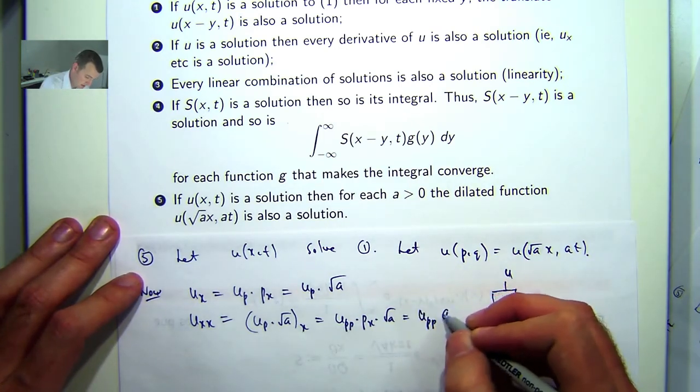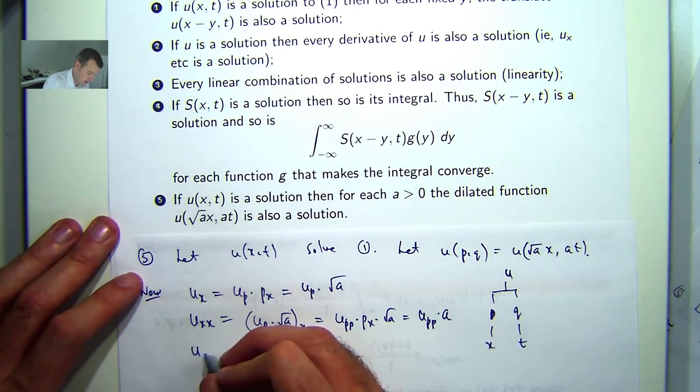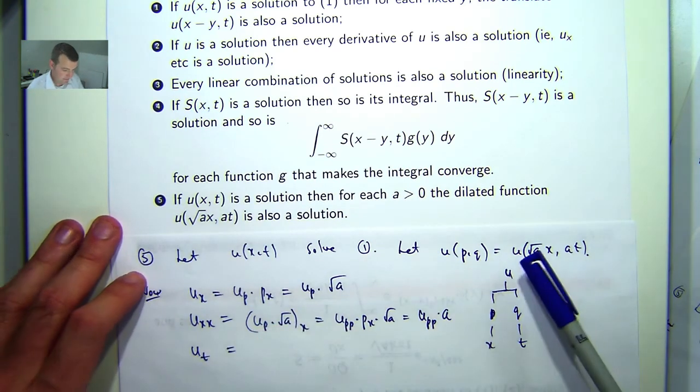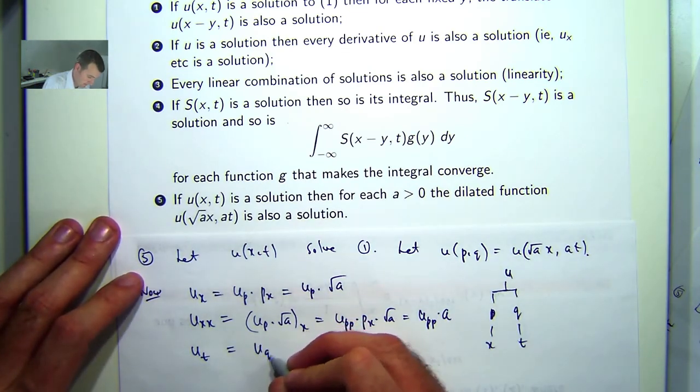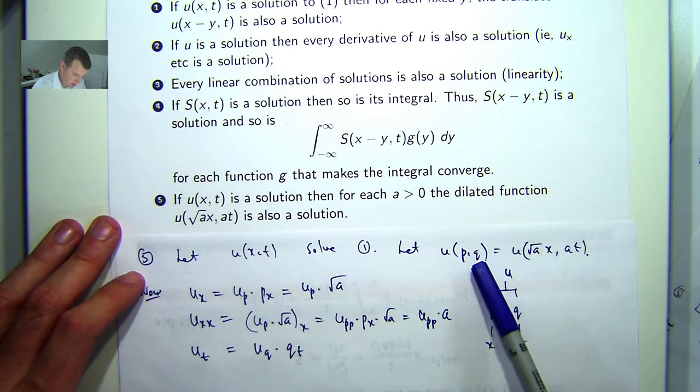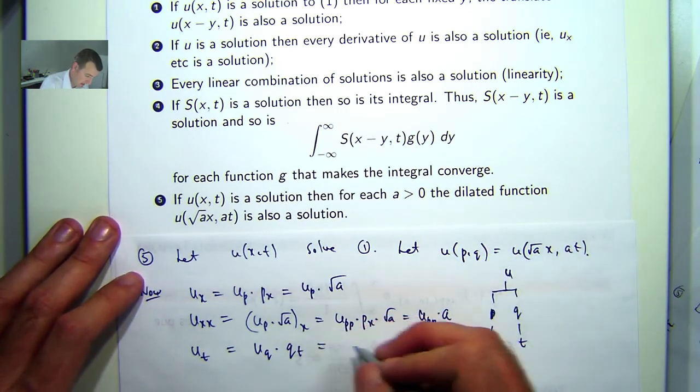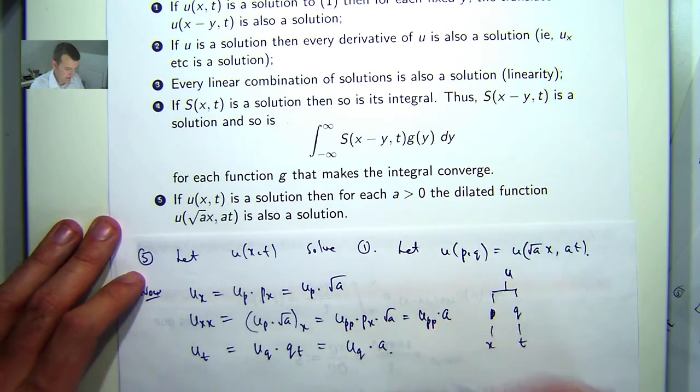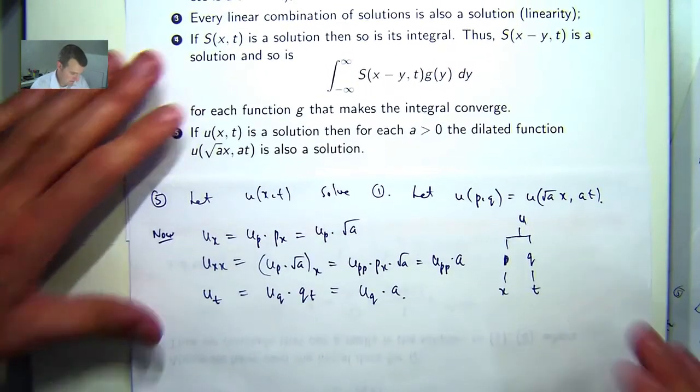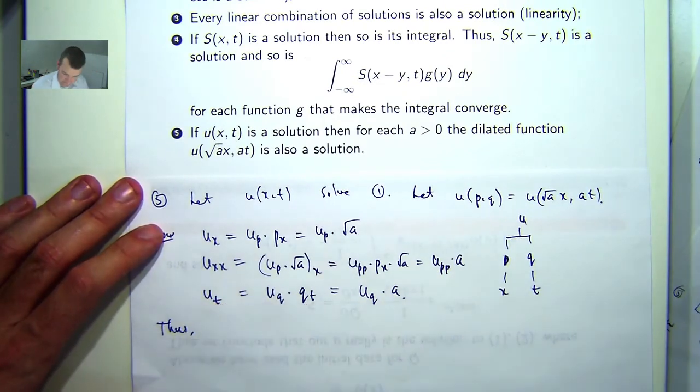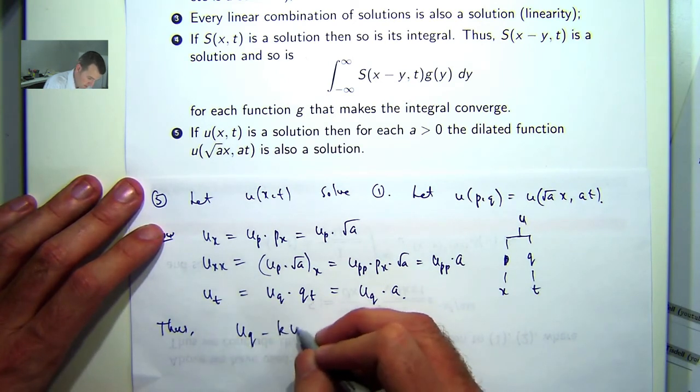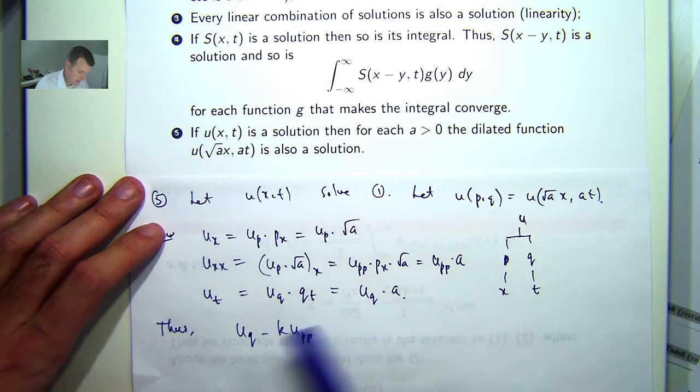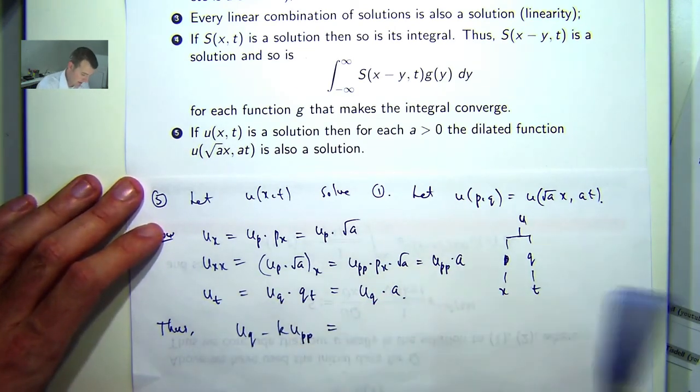u_t. Well, that's just going down this column, u_q times q_t. Now, q is a times t, so q_t will be just a. So, u_pp, we want to show that this equals 0. So u_q is just going to be u_t over a.